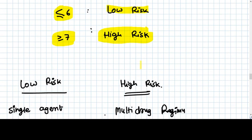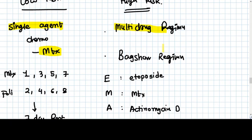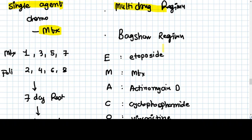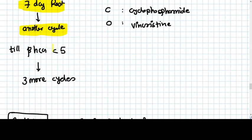That makes the plan of treatment. For low risk patients, single agent treatment with methotrexate chemotherapy is given. How we give methotrexate: same as we are giving in the persistent disease. Methotrexate on day one, three, five, seven, and folinic acid, that is leucovorin, is given on second, fourth, sixth, and eighth day. Then seven days of rest, and then we give another cycle.